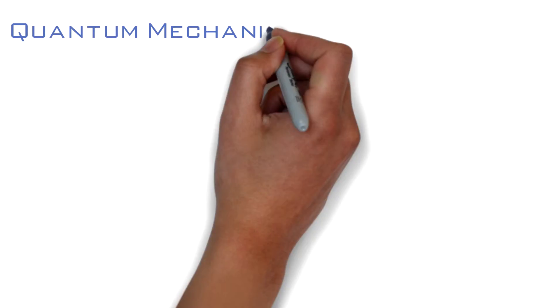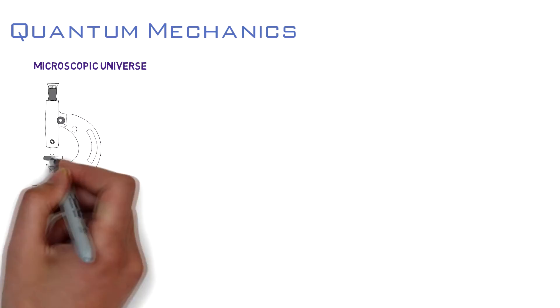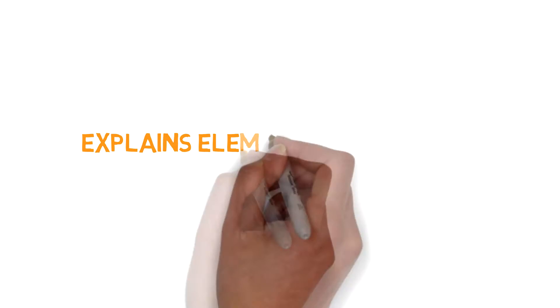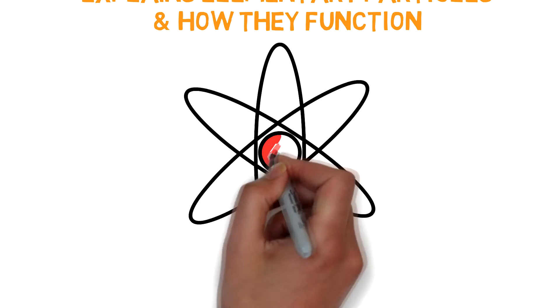Quantum mechanics is a branch of physics that deals with the universe on the microscopic level. It includes the uncertainty principle and wave-particle duality, and is used to explain elementary particles, their properties, and the way they function. Long story short, general relativity deals with things on the larger scale, while quantum mechanics deals with things on the smaller scale.